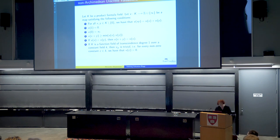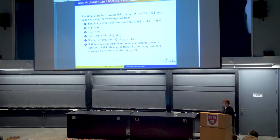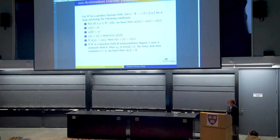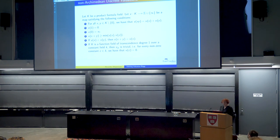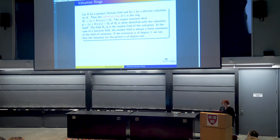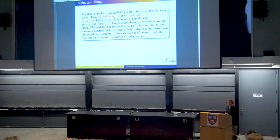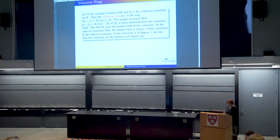I will be discussing non-Archimedean and discrete valuations. For our purposes, it's just a map from a field into Z plus infinity, satisfying the usual conditions. If k happens to be a function field, we assume that the valuation is trivial on the constant field — the values of the valuation are zero. The valuation ring is the ring of elements of the field where the valuation is non-negative, and the maximal ideal consists of all elements where the valuation has a positive value. We often identify the valuation with the ideal.